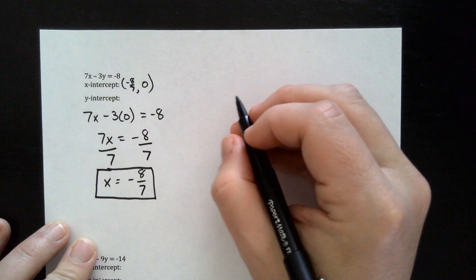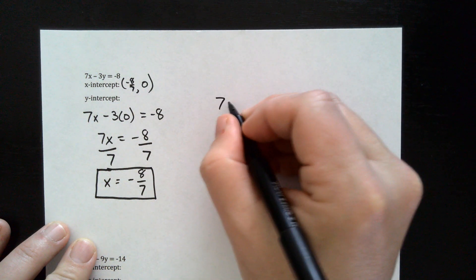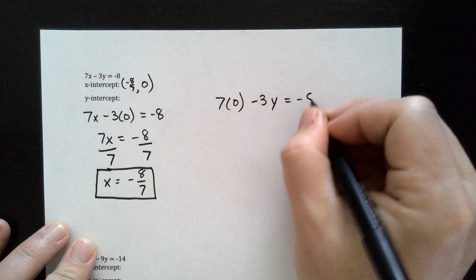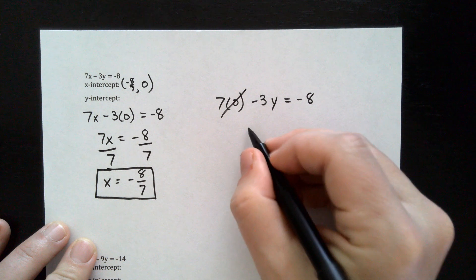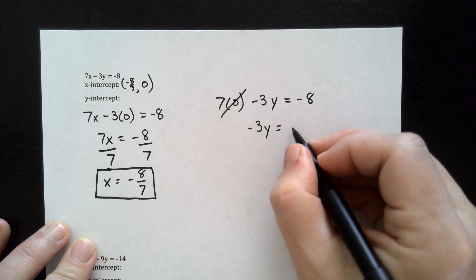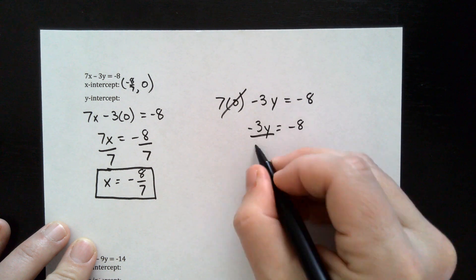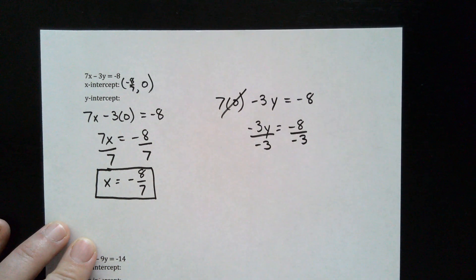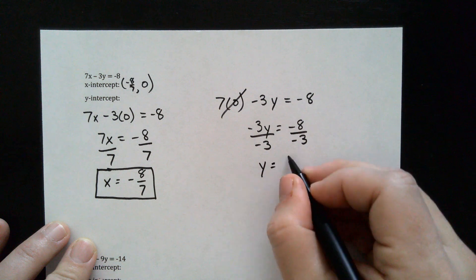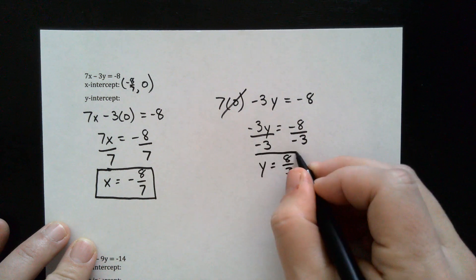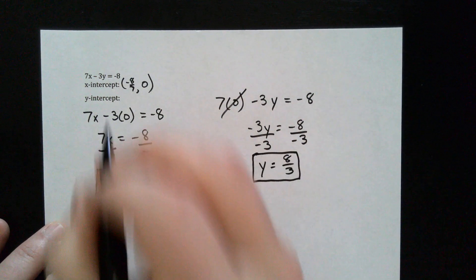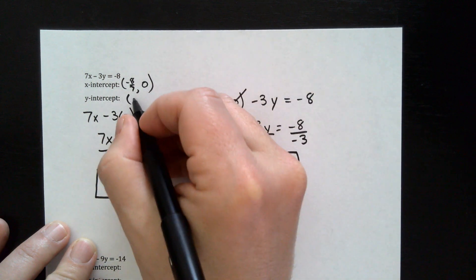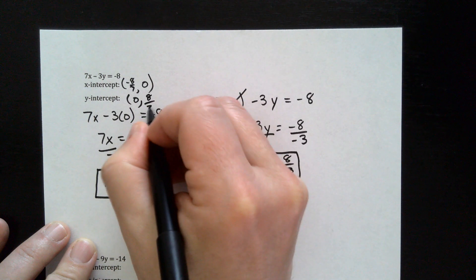Now let's find the y intercept. We'll make x equal to zero, so put a zero in there — minus 3y equals negative eight. That term goes away, so negative 3y equals negative eight. Dividing by negative three on both sides, remember a negative divided by a negative is a positive, so y is equal to positive eight over three. The ordered pair would be zero comma eight over three.